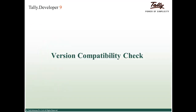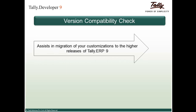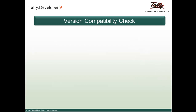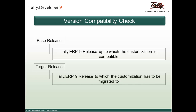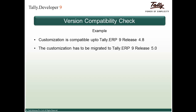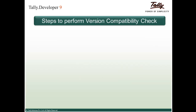Let us first start with an understanding of the Version Compatibility Check feature in detail. It assists in migration of your customizations to function in the latest release of Tally ERP 9, and helps in identifying changes done in the source code of any higher release that might affect your customization. Two basic terms to remember are the base release and the target release. The base release is the Tally ERP 9 release up to which the customization is compatible, and the target release is the one to which the customization has to be migrated.